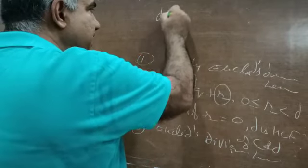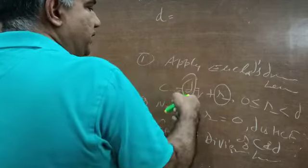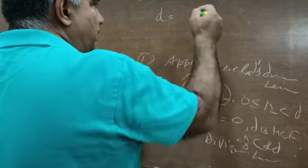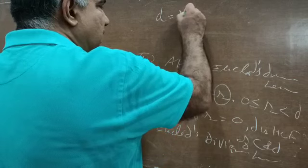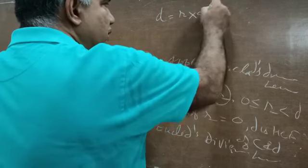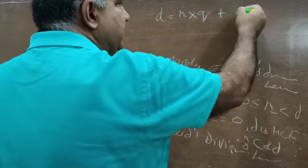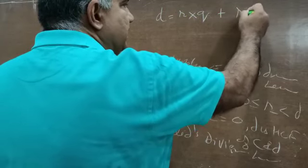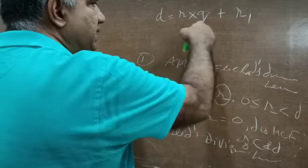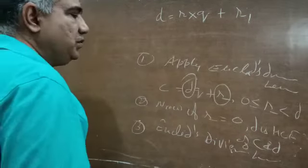So we write D is equal to R into Q plus R₁ (a new remainder). After the first step, what was the divisor becomes the new dividend, and what was the remainder becomes the new divisor. Keep applying this process.